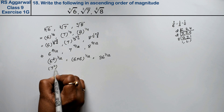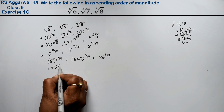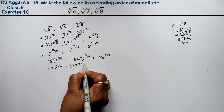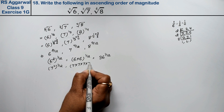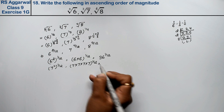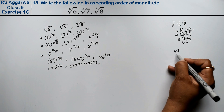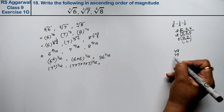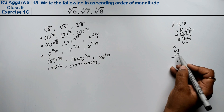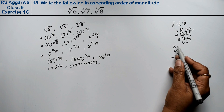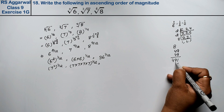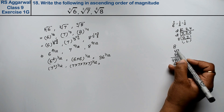Next, 7^(4/12) = (7⁴)^(1/12). So we calculate 7×7×7×7. That is 49×49: 9×9 is 81, carry 8; 9×4 is 36 plus 8 is 44; 4×9 is 36; 4×4 is 16. So 49×49 gives us 2401. Therefore 7^(4/12) = 2401^(1/12).